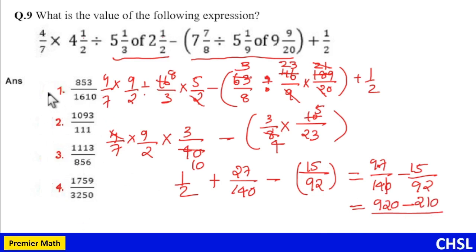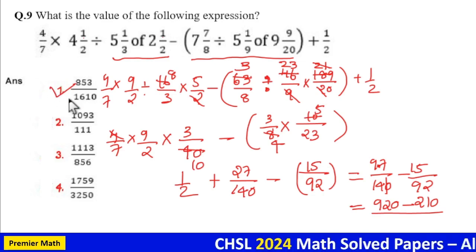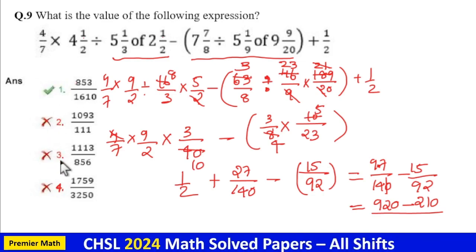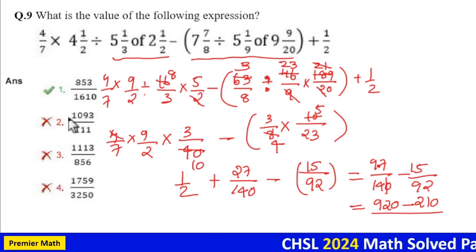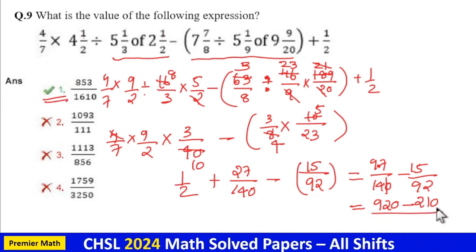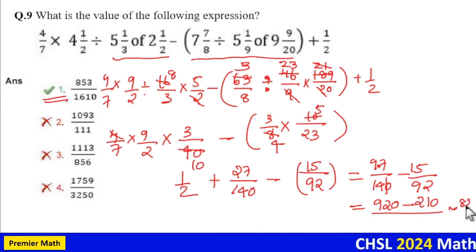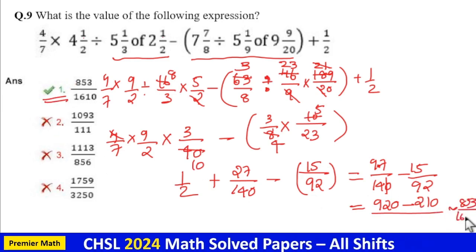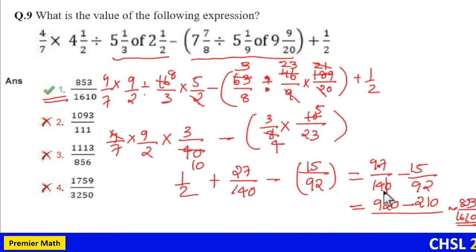3 digit number in the numerator, only option 1 is matching. That is only option 1 have 3 digit number in the numerator. So option 1 is your answer. So this is around 853 divided by 1610. So this is around 853 divided by 60. All right.